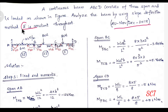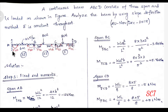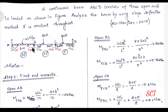E means Young's modulus. So if E is constant, it means EI is constant throughout. If EI varies with span, the question will state that. There are 4 supports: A, B, C, D. Span AB length is 6m, span BC length is 3 plus 2 equals 5m, and span CD length is 2.5m.